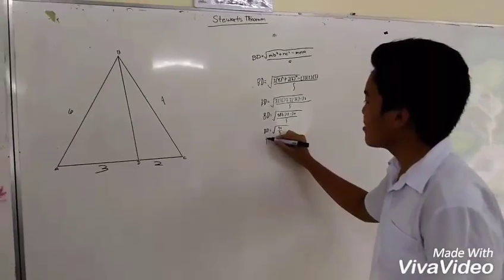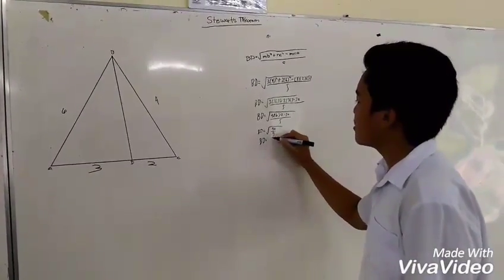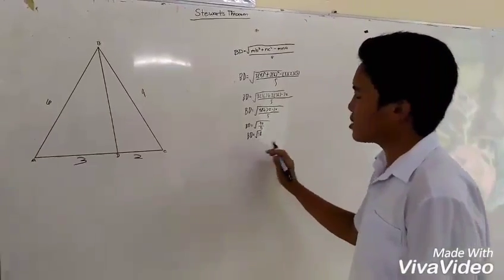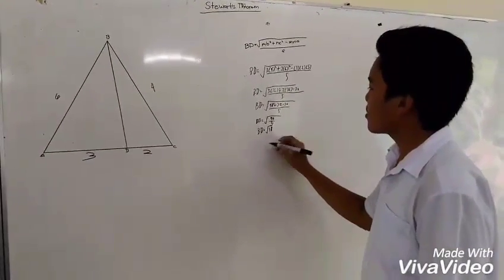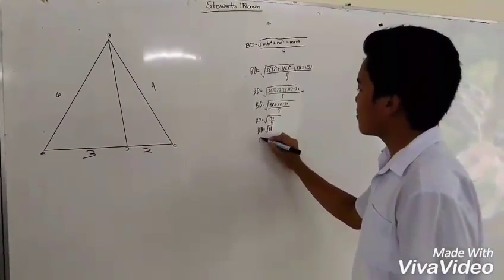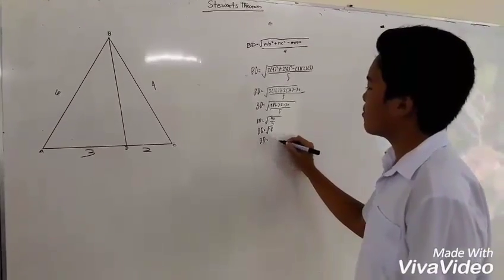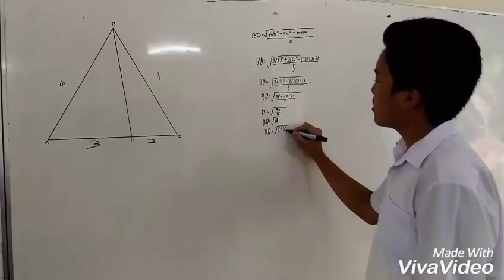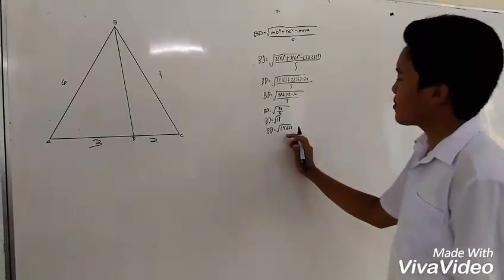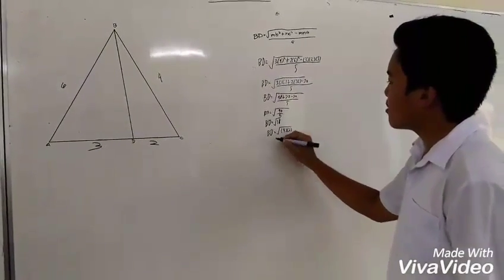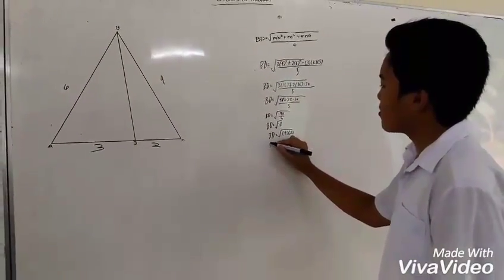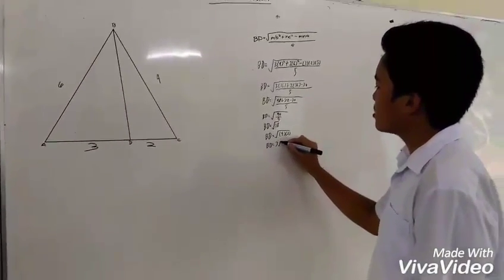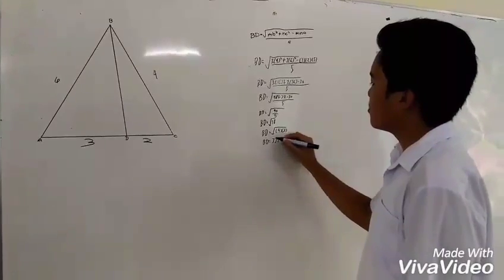So, BD equals the square root of 18, which is not a perfect square, so we factor it out. BD equals the square root of 9 times 2. Since 9 is a perfect square, we can factor that out. BD equals 3 the square root of 2 units.